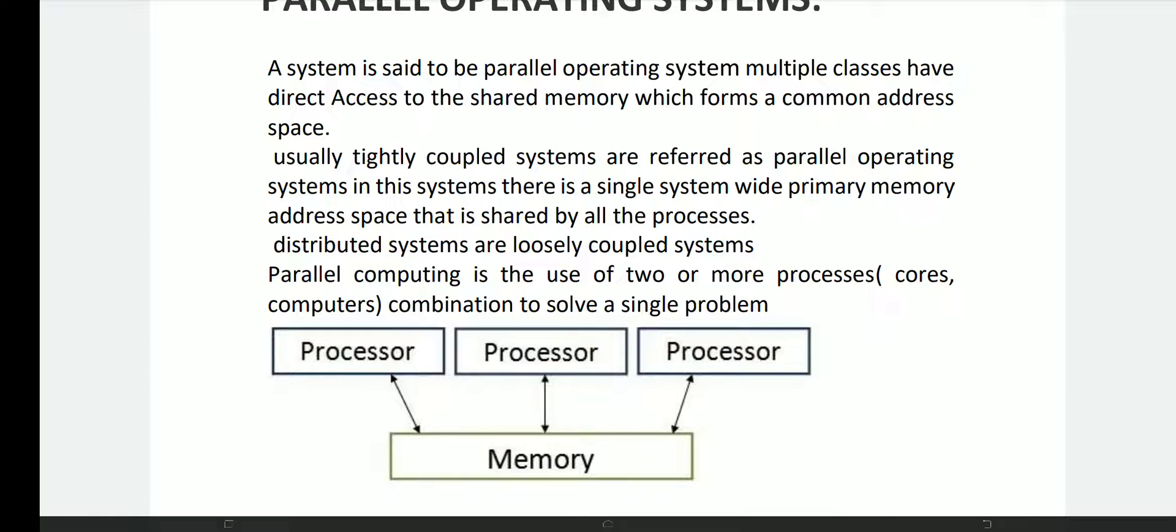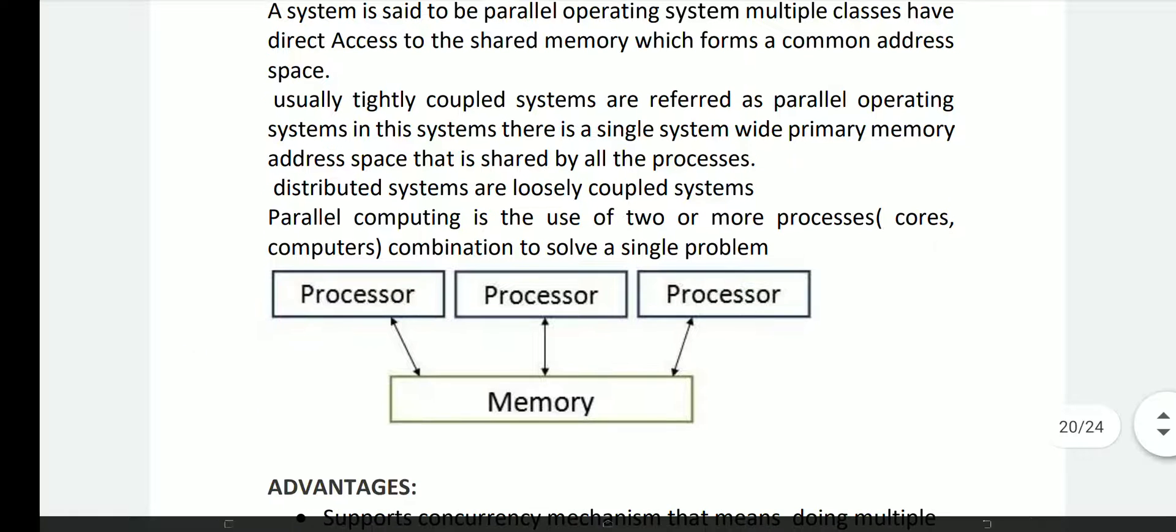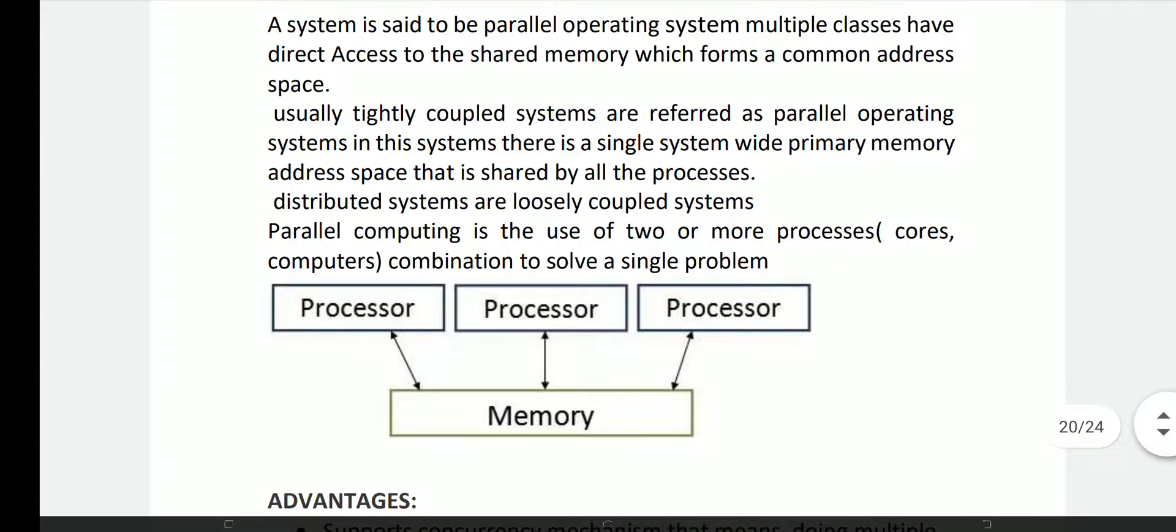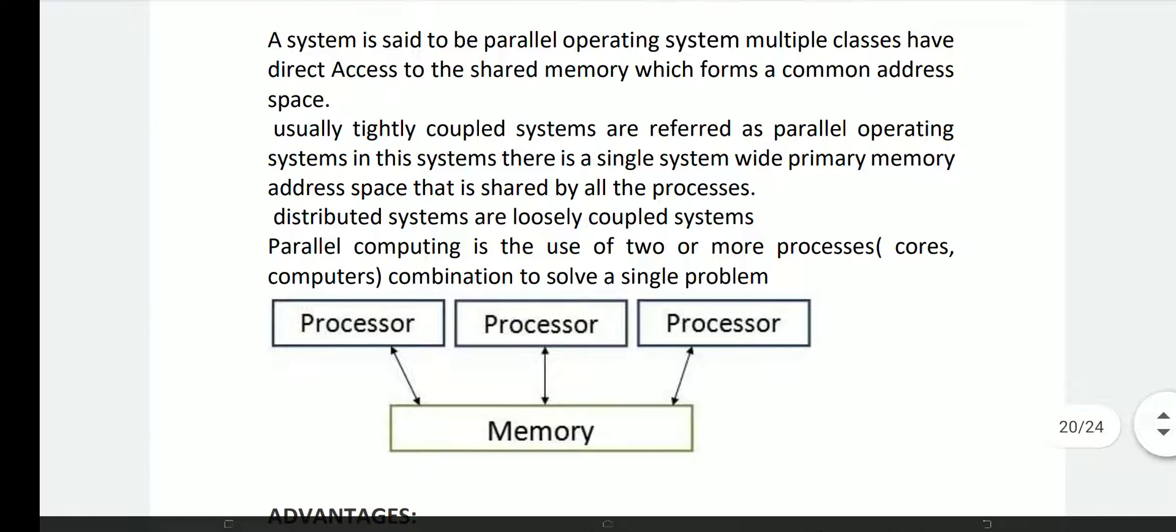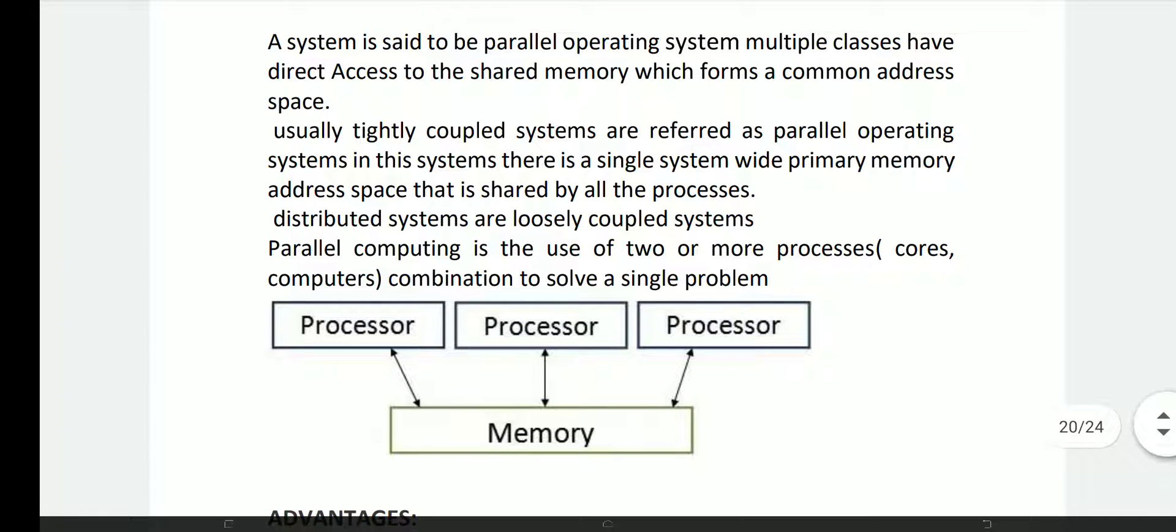Parallel computing is the use of two or more processes, cores, or computers in combination to solve a single problem. In parallel operating systems, multiple processors or multiple CPUs at a time work together to solve complex problems.